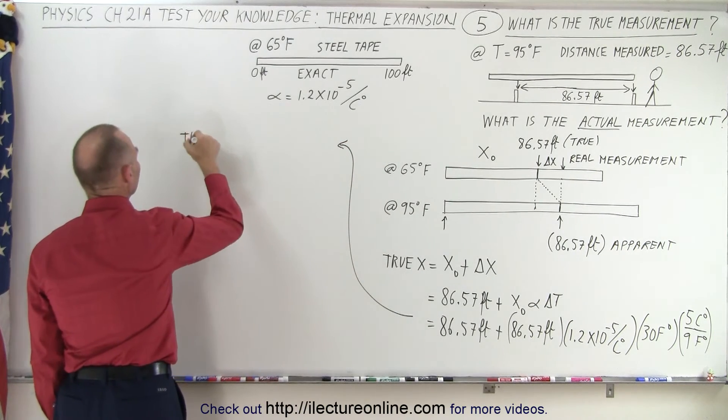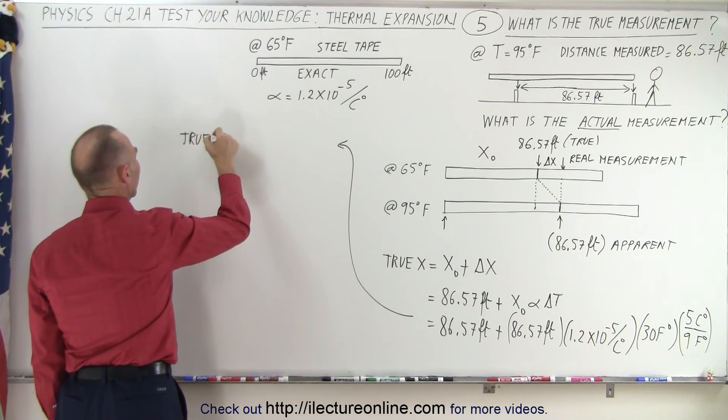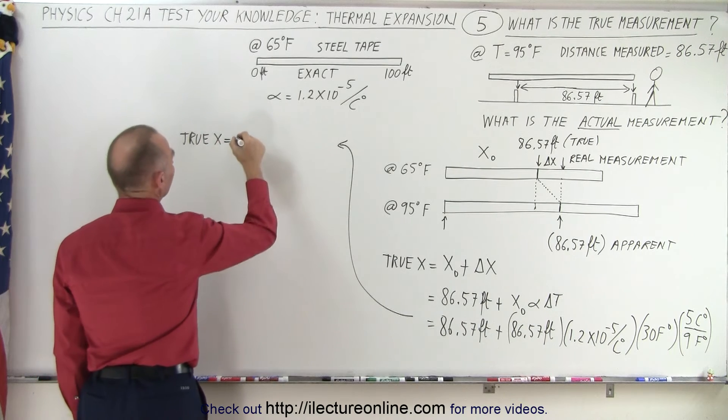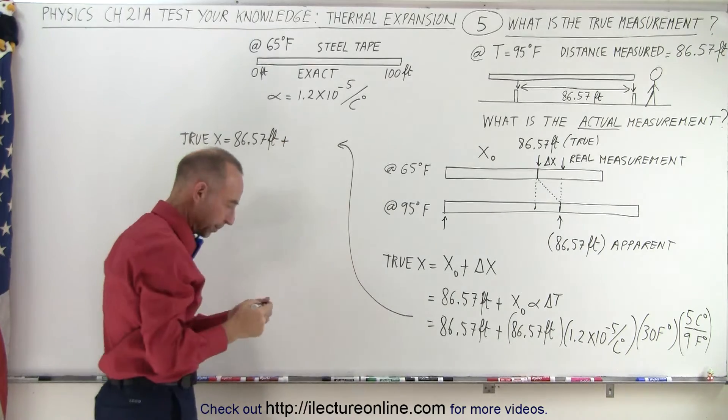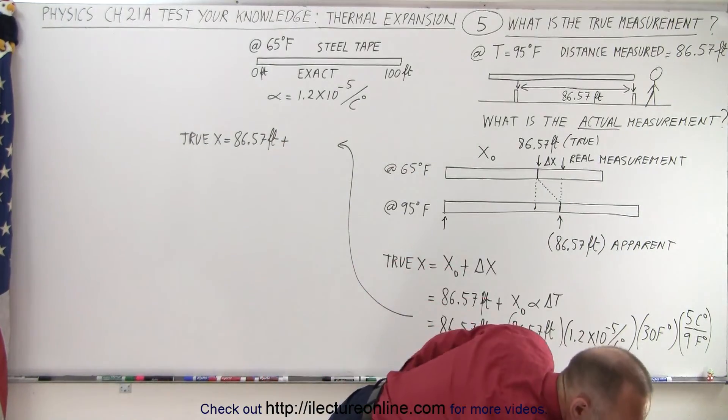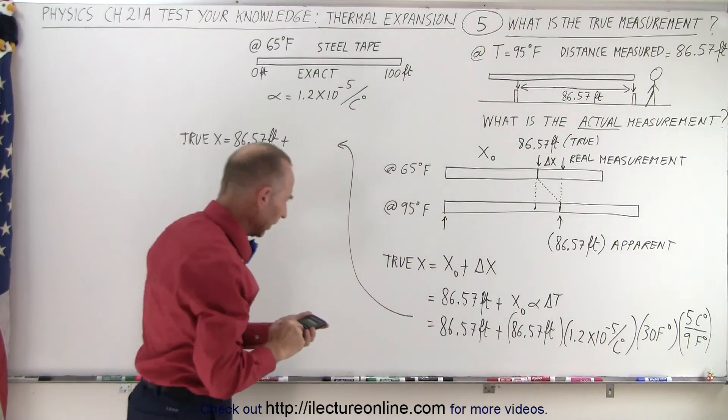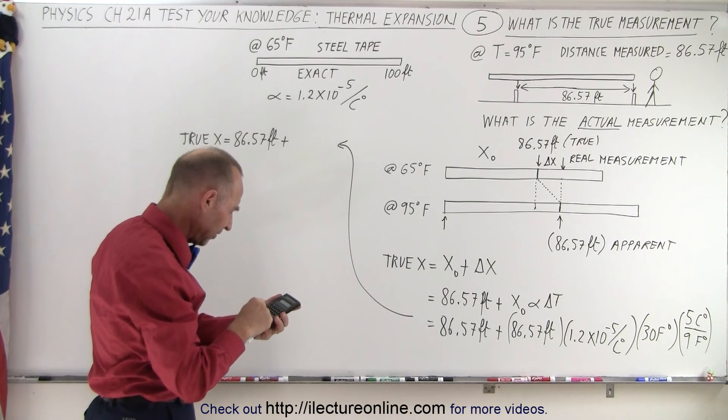So the true value for x, the true x equals 86.57 feet plus... Now with a calculator, we can calculate the other part. So we have 86.57...